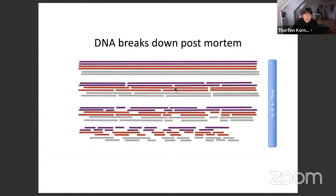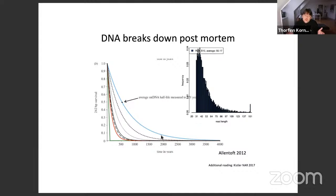Similar to radioactive decay with a half-life, you can look at an ancient genome and the mean fragment size follows a decaying distribution. As it gets older, the fragments get smaller and smaller. This is why movies like Jurassic Park, where dinosaur blood is found in a mosquito in amber, is not feasible — there might be DNA in it, but it's so fragmented that it would be impossible to stitch together into a genome.